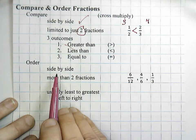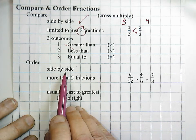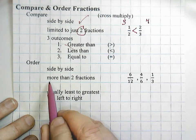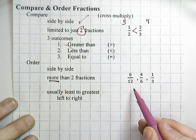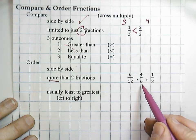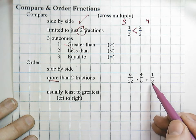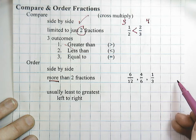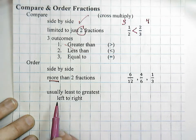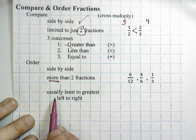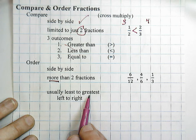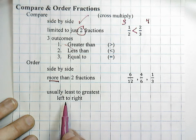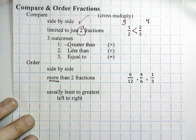When we order fractions, we're also putting them side-by-side, but there are more than just two fractions. For example, here we have three fractions, and many times there can be four and even five fractions. Usually we will order those from least to greatest, sometimes greatest to least, and most of the time from left to right — but sometimes that will differ depending on the directions.